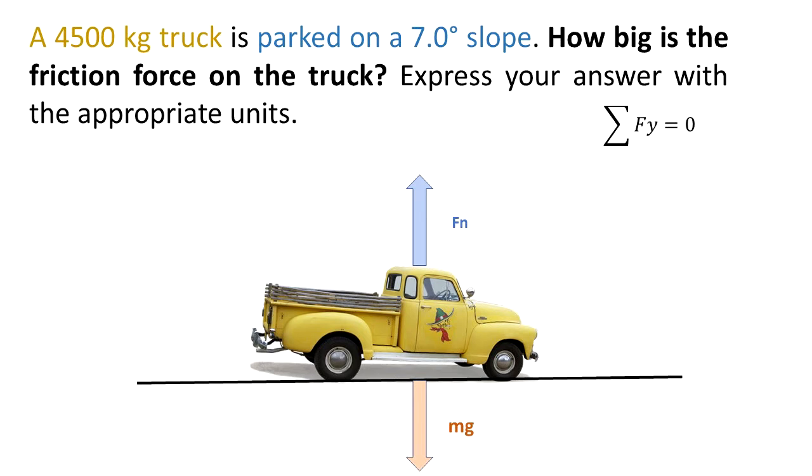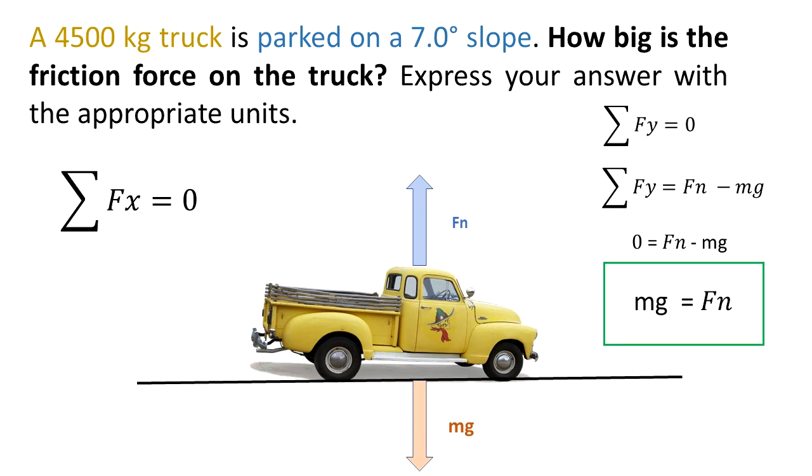We know that this truck is in static equilibrium. The summation of the forces in the y direction is equal to 0, so Fn minus Mg is equal to 0. For this case, Fn is equal to Mg. And we know that the unbalanced force in the x direction is also 0, because the truck is static.